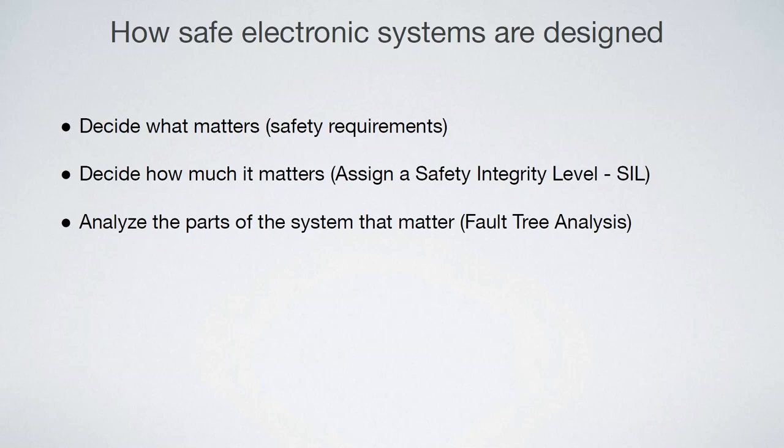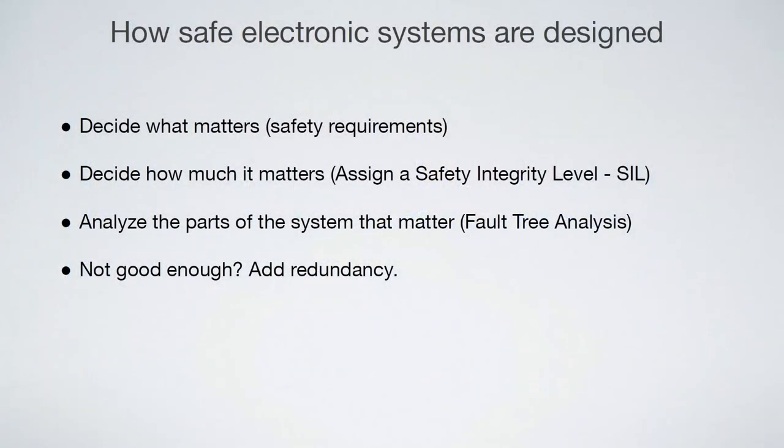With that in hand, they'll pick apart their system design and figure out which parts could contribute to violating the safety requirement in question. You do this by forming a tree and saying: if this faults, then I will cause a fault up here, and so on. That's called a fault tree. Then they ask: based on this analysis, have I met the requirements laid out in whatever standards they're looking at for the safety integrity level they decided upon? If it's not good enough, maybe they'll buy a more expensive part or add some kind of redundant system.